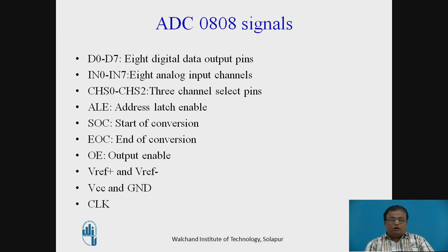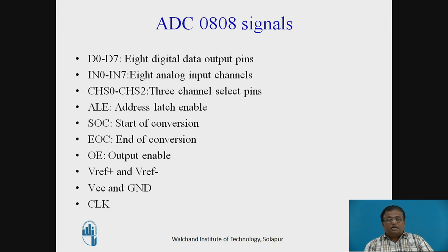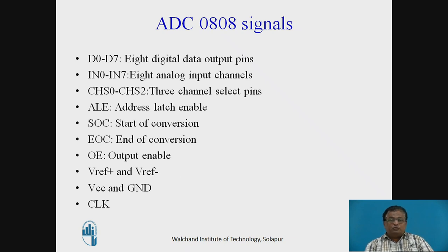The next pin is called ALE — address latch enable. This signal is used to latch the address of the selected analog input channel. There is a need to send a high pulse on the ALE pin, meaning ALE is an input signal to the ADC. Through the program, there is a need to generate a high pulse on the ALE pin of the ADC. Once the input is applied and the channel is selected, the next step is to start the conversion by sending the start of conversion command to the ADC. The ADC requires a high pulse to start the conversion.